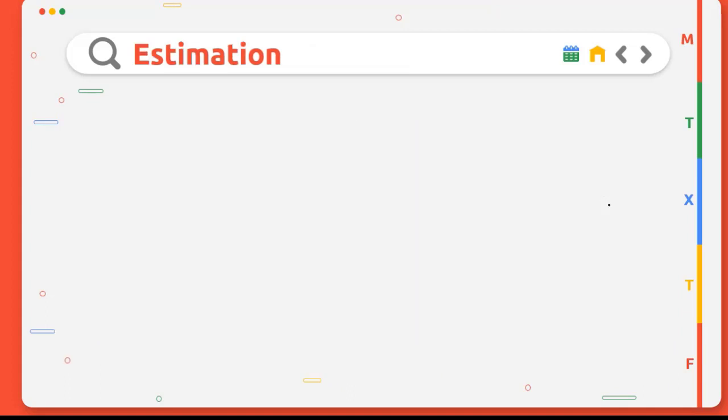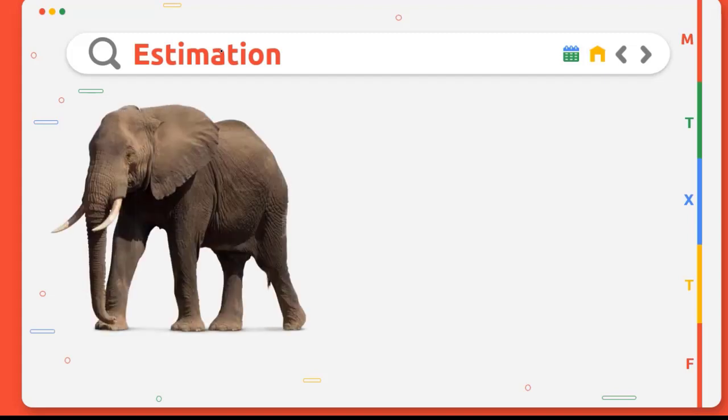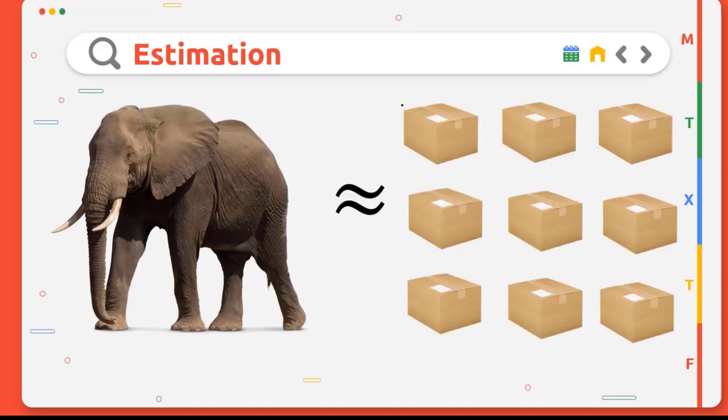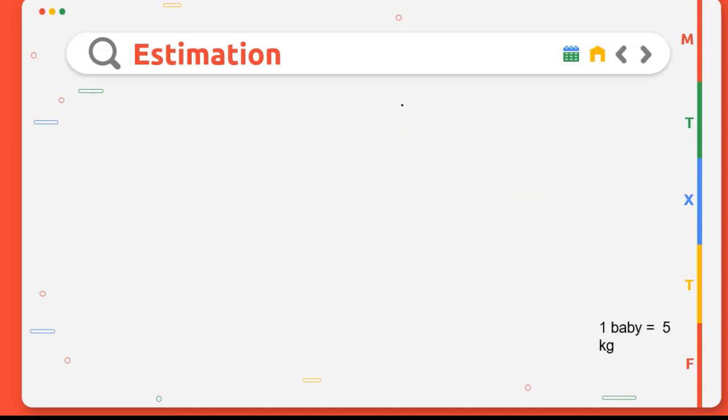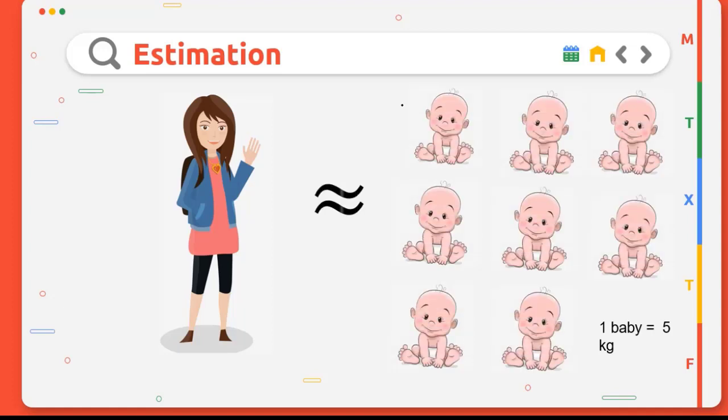But what if you don't have any tools to do measurement? Don't worry, you can do an estimation. For example, if there is an elephant, you can say that this elephant has a weight about 3000 kg, or this girl has a weight around 8 babies.